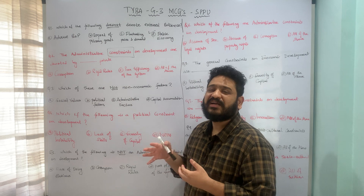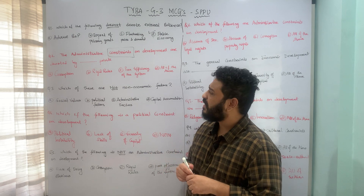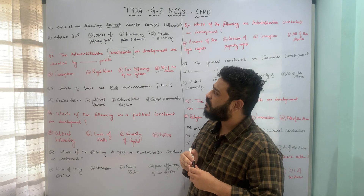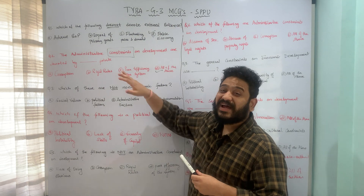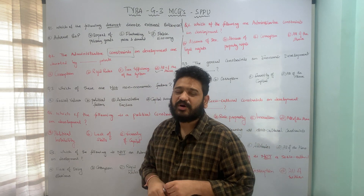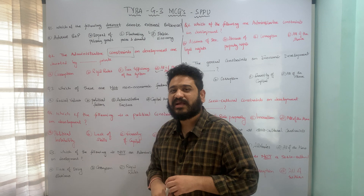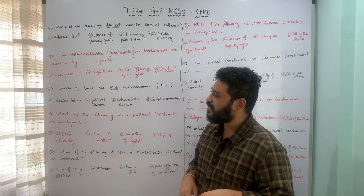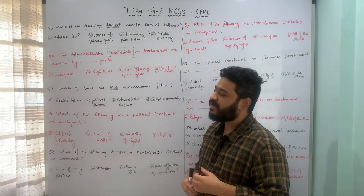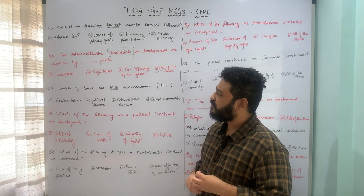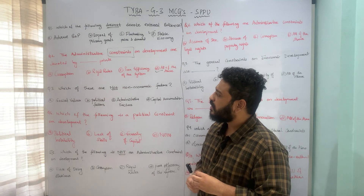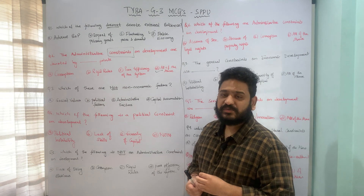Therefore, all of the above is the correct answer. These are all administrative constraints on the process of economic development — corruption, rigid rules, and poor efficiency of the system.